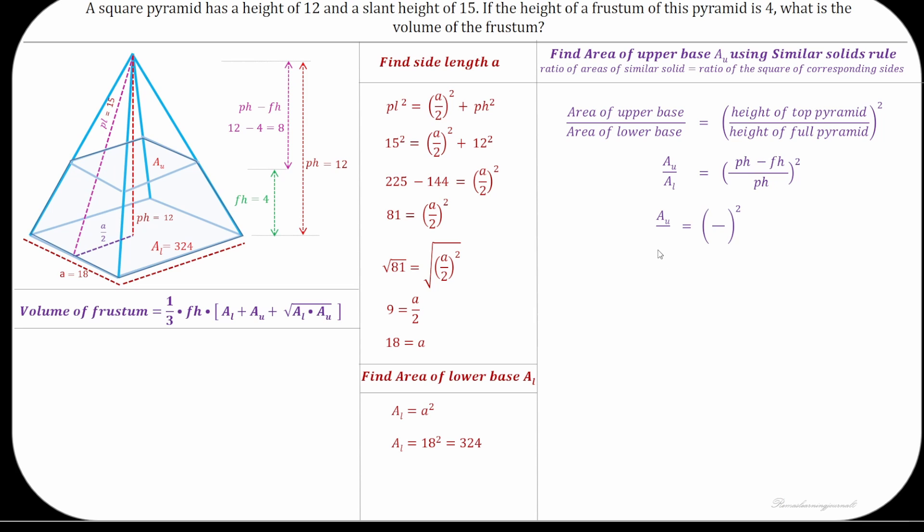Now substitute the area of lower base and height of the top pyramid and height of the full pyramid and simplify it to find the area of upper base AU. Area of upper base is 144.